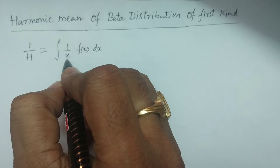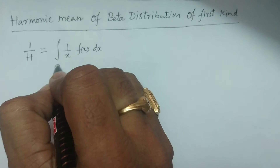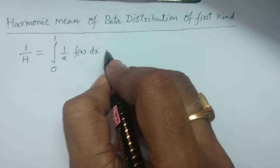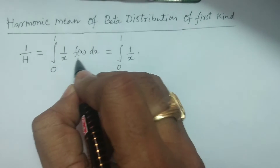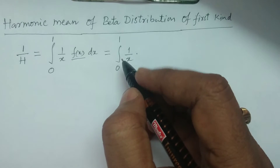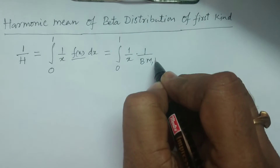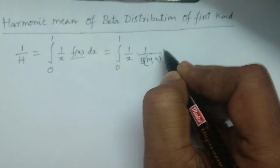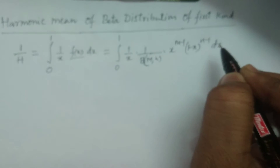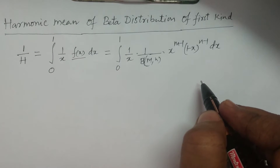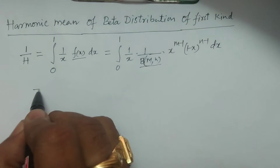Here, x follows a beta distribution of first kind, therefore the limits are 0 to 1. So we calculate the integral from 0 to 1 of 1 by x times f of x. The probability density function of beta distribution of first kind is 1 by beta(m, n) times x power m minus 1 times 1 minus x whole power n minus 1 dx. Since 1 by beta(m, n) is a constant and does not depend on integration, you can take it outside.